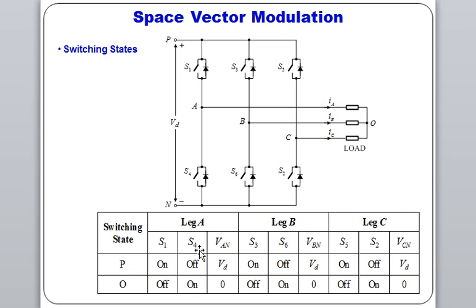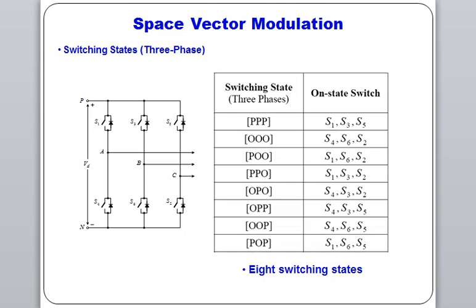The next type is Space Vector Modulation, which is defined according to switching states. Switching states can be two ways: either on or off, defined across the legs. With three legs, all switches can be on or off, so we define it with respect to point P and take a point O. We write S4, S6, and S2 as one switch-on state.